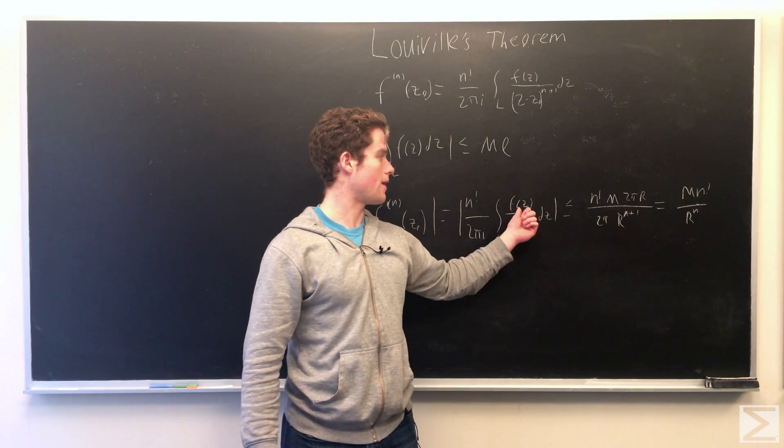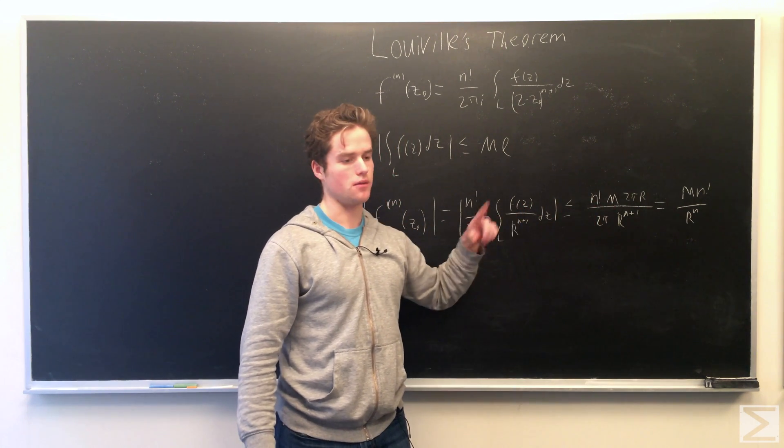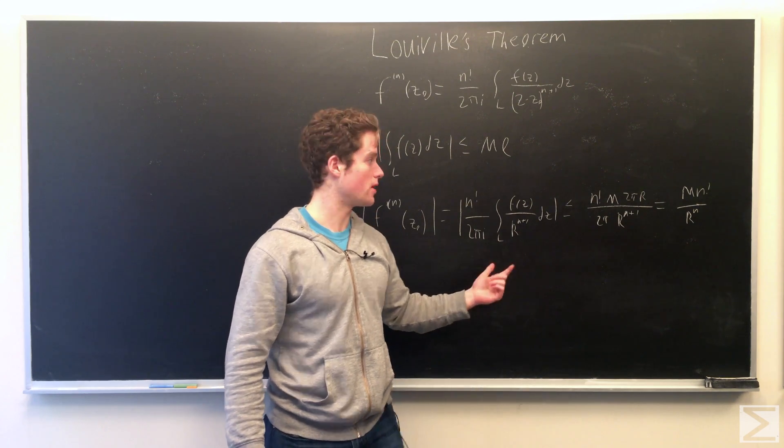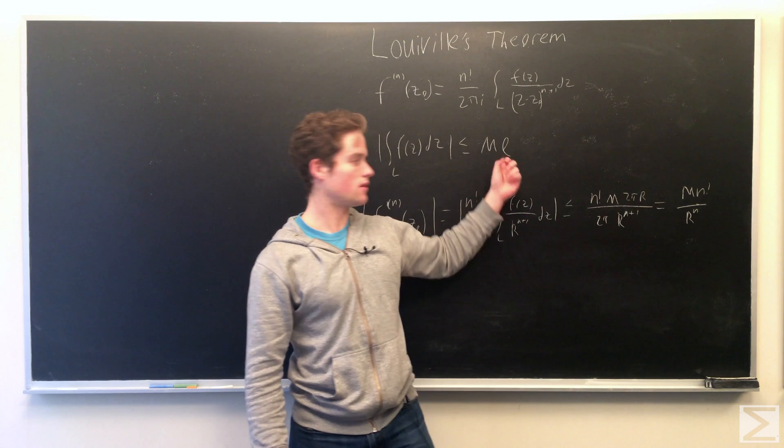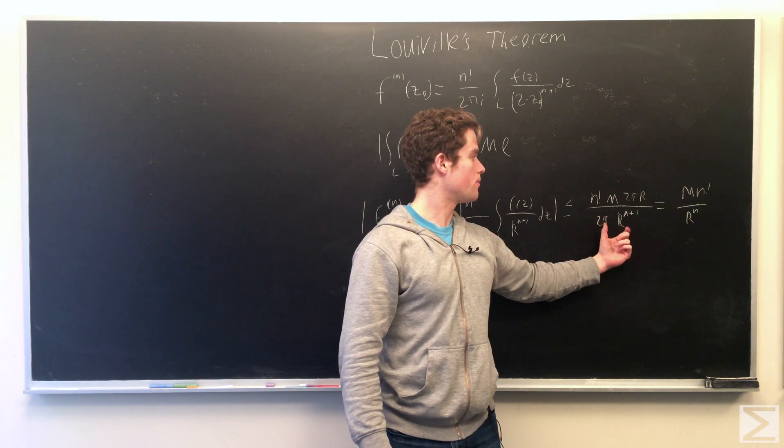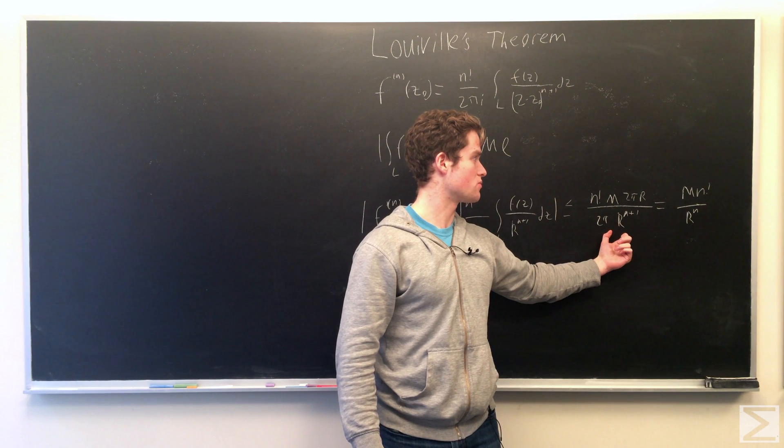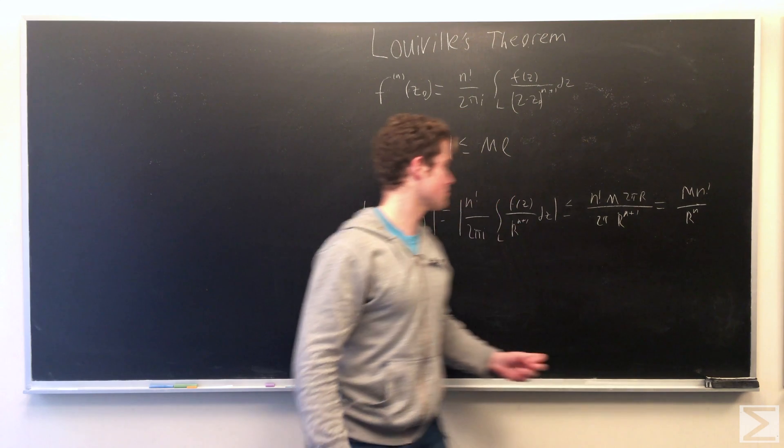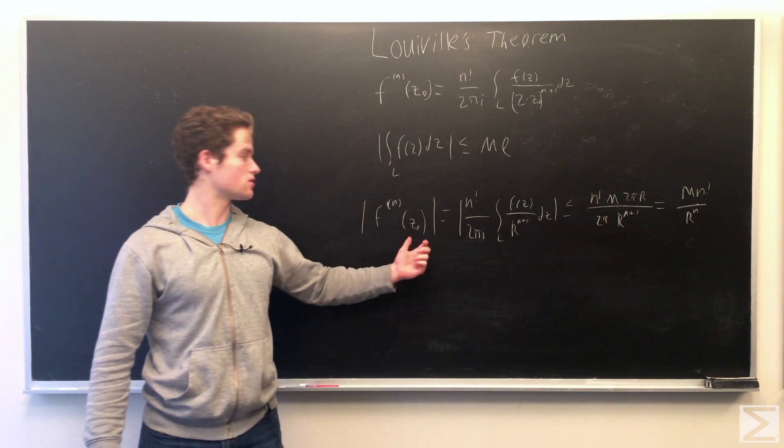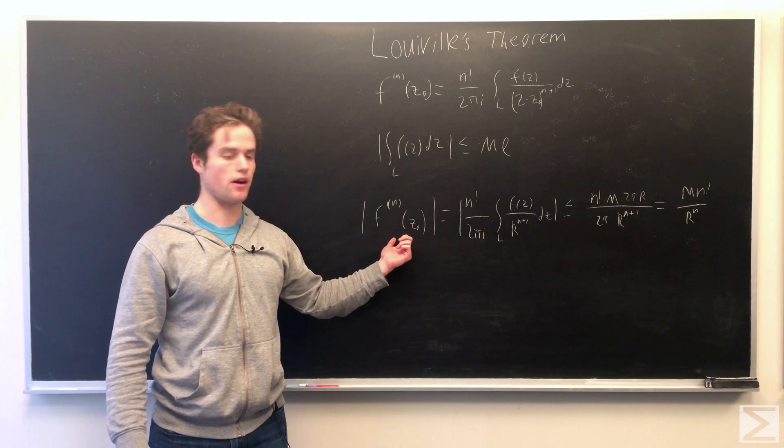And using our upper bound here, say the maximum of f, maximum modulus is M, the circumference of the circle 2πr. So putting that in our bound M times L, we have n factorial M times 2πr over 2π r^(n+1). And that simplifies to n times n factorial over r^n, which is an upper bound for the modulus of the nth derivative of f at z naught.